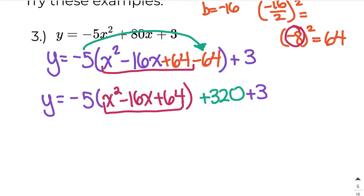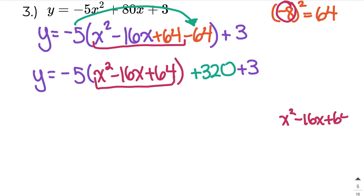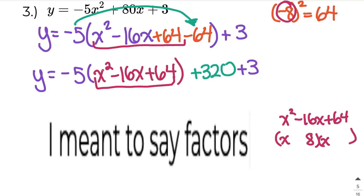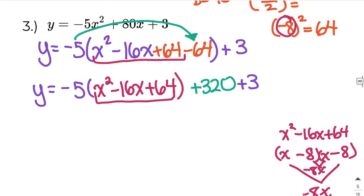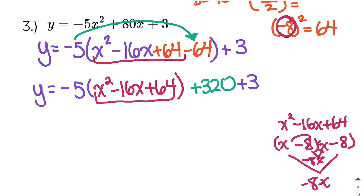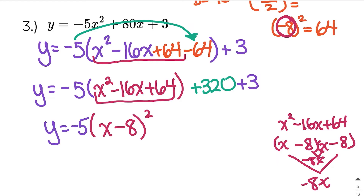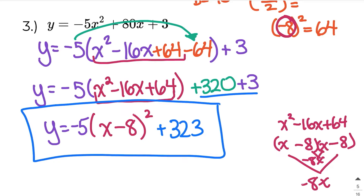Now I need to factor my perfect square trinomial. I'll do this on the side so you can see where it comes from. I know this is x times x because x times x is x squared. Then I look for 8 times 8 because we completed the square and we want identical brackets. Both 8x terms have to be negative to give negative 16x. So I rewrite this as (x minus 8) squared, then copy everything else down and collect like terms. Positive 320 plus 3 is 323. This is my answer in vertex form.